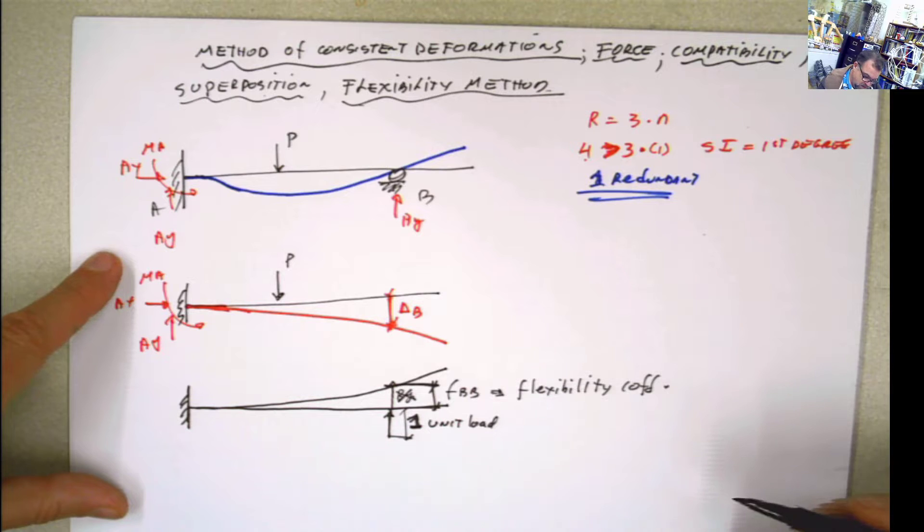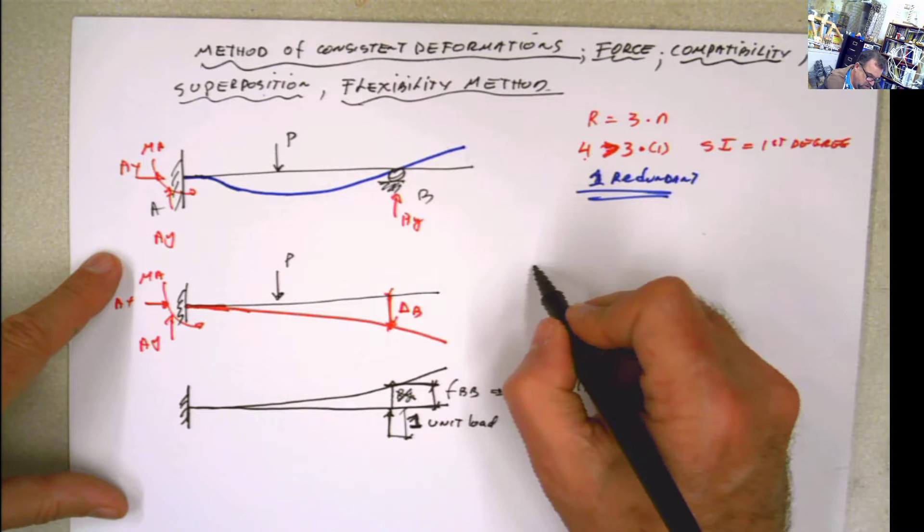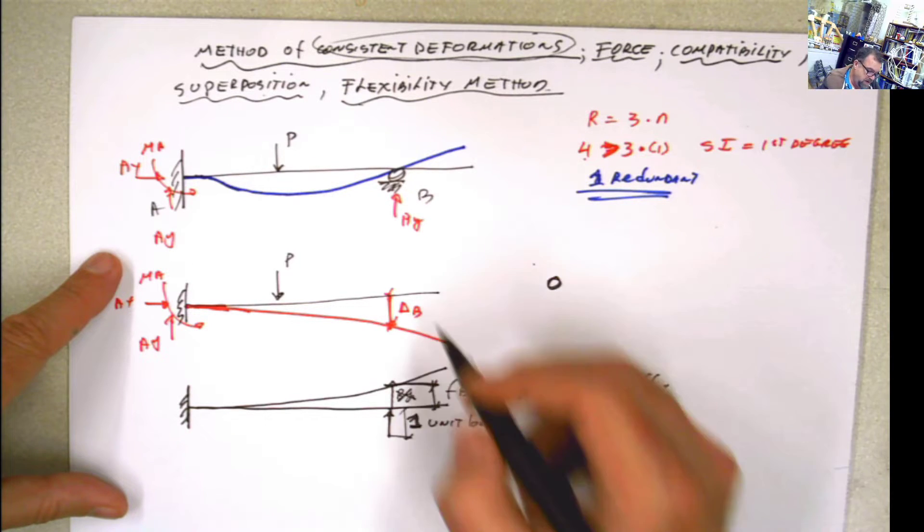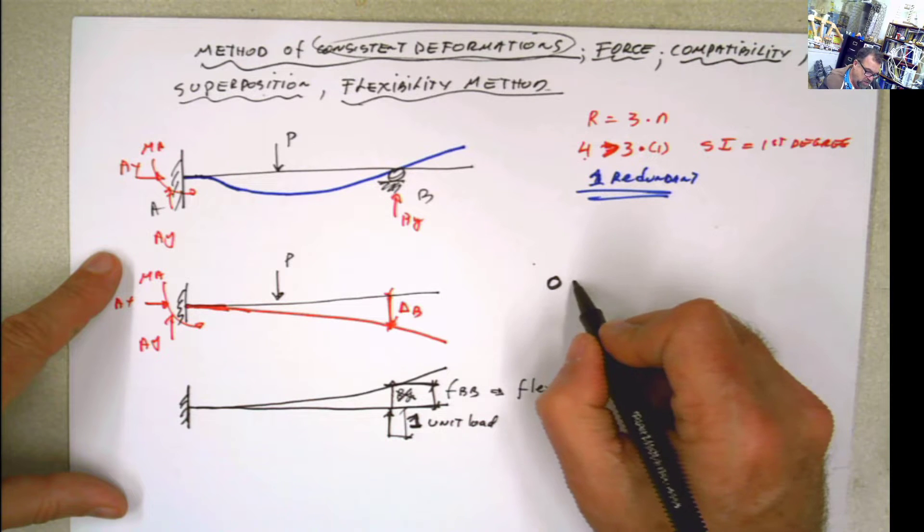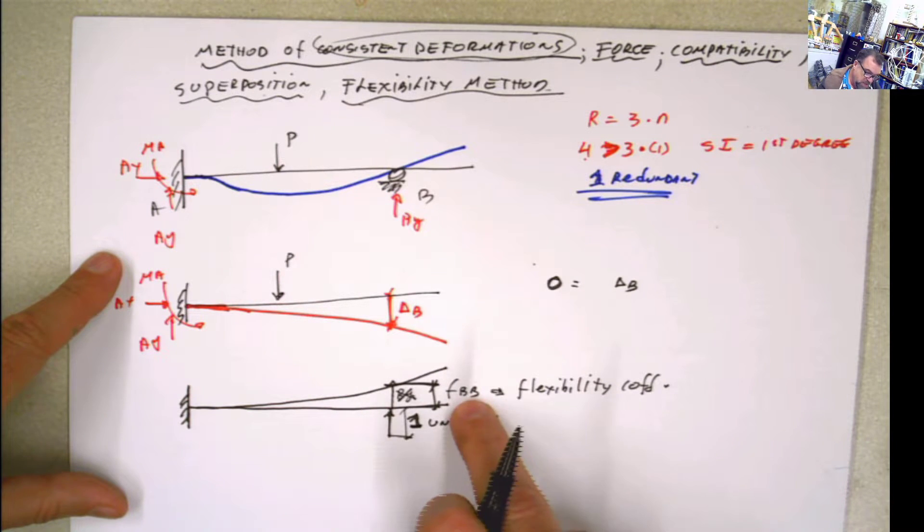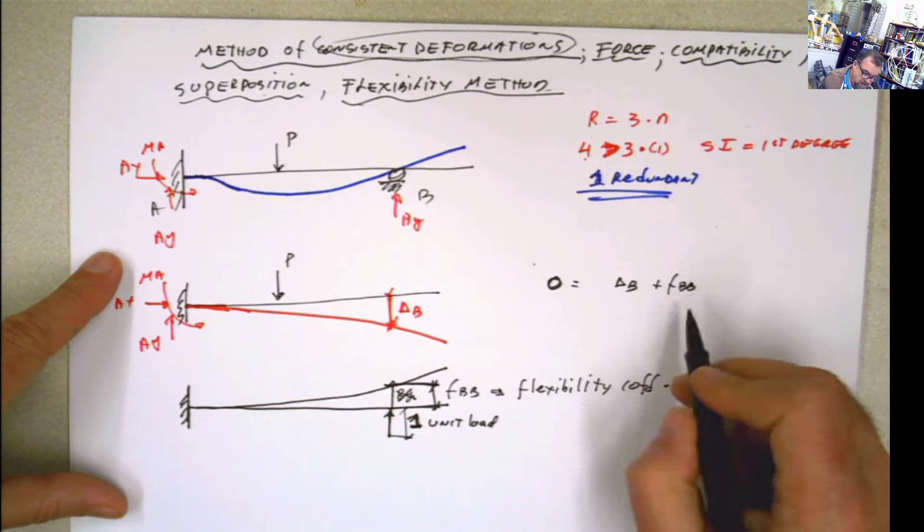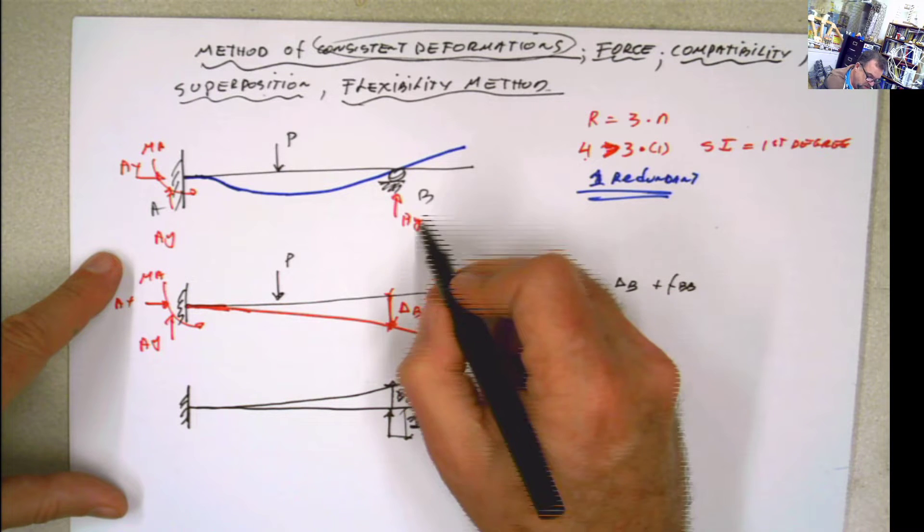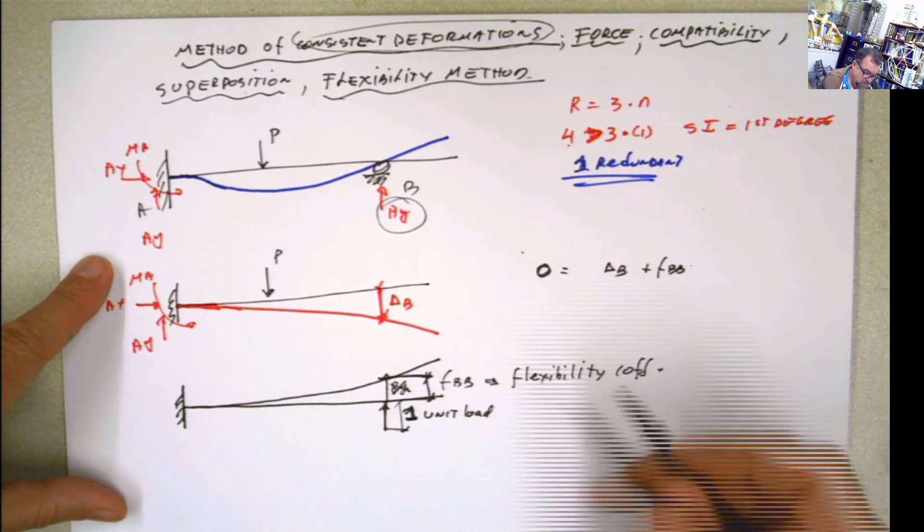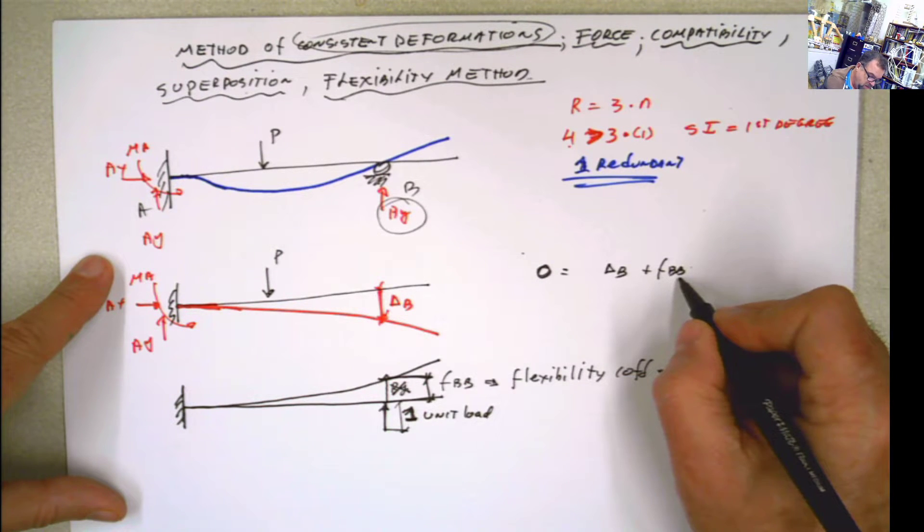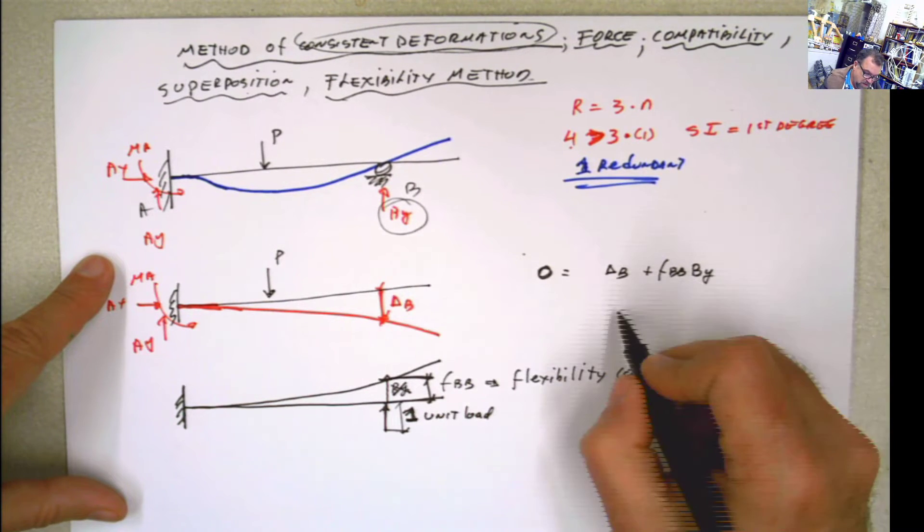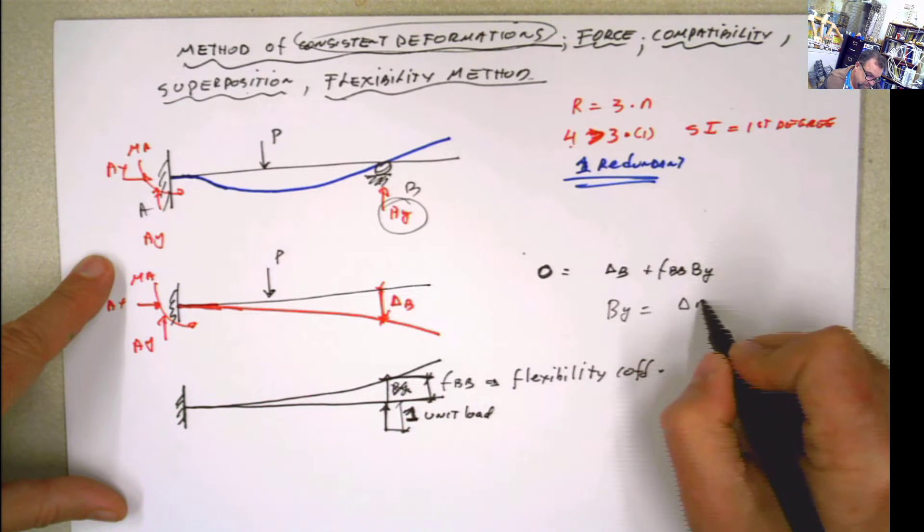So I can apply a unit load here. And then I'm going to get this deflection at that point which is called Fbb, or I call it Fbb. And this is the flexibility coefficient. And that's why the method is also called flexibility method, because this Fbb will be the amount of deformation here at that point in particular when I apply a unit load. Now what do I know about this? The original deformation, and that's why it's called method of consistent deformation, my deformation should be zero. However by eliminating that roller I get a deformation of delta B. Then I'm going to push it up and I'm going to get an Fbb. But Fbb is if I apply a unit load, this is not a unit load, this is a By load. So because this is in the elastic range we can consider that this is proportional. So if a unit load is going to give me Fbb, a force of By is going to give me Fbb times By. And now from here I can calculate my By as this.